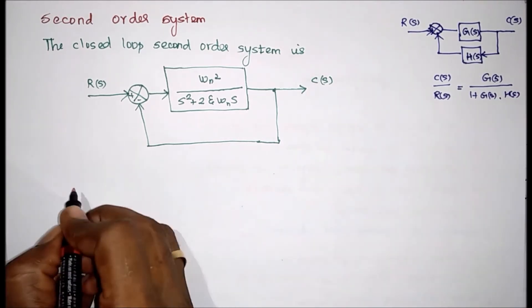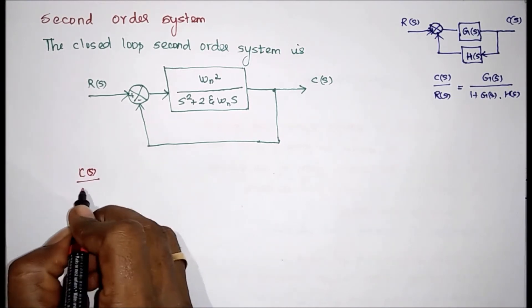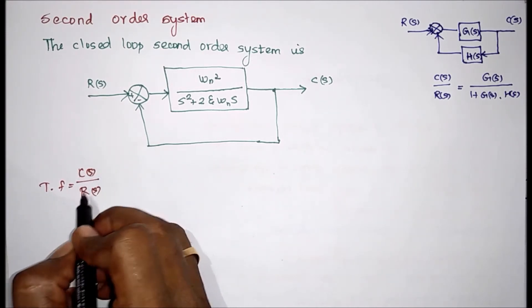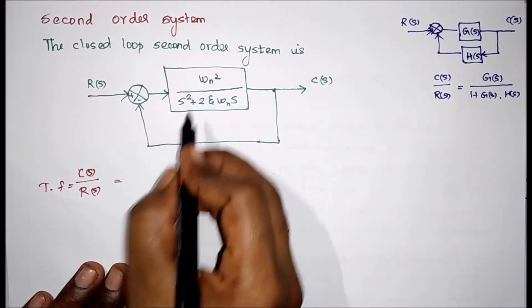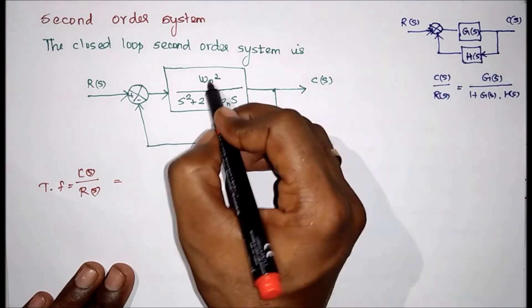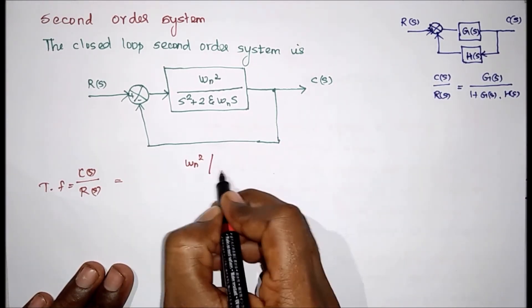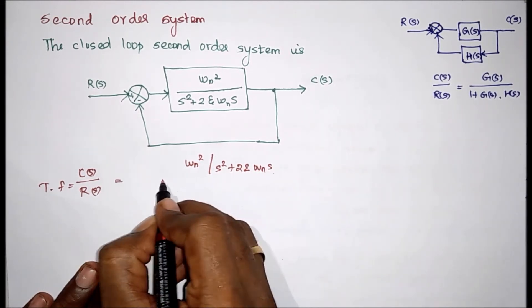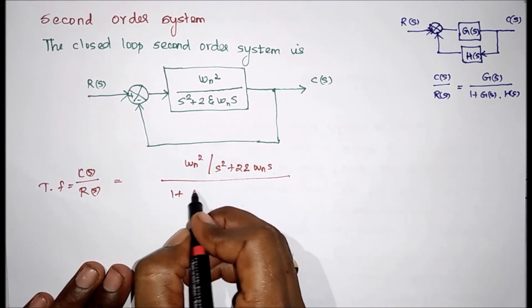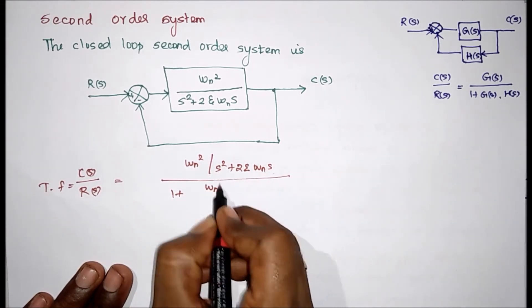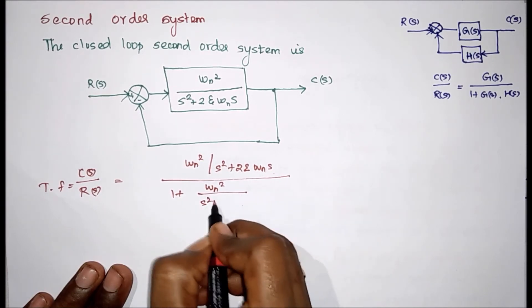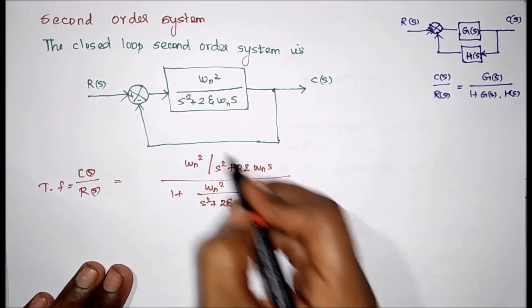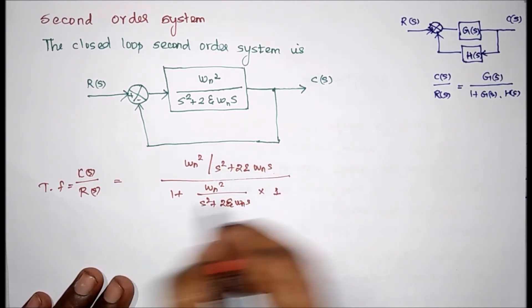Now we have to substitute. C(s) output divided by input — the transfer function equals the Laplace transform of output divided by the Laplace transform of input. G(s) value equals ωn² divided by s² plus 2ζωn·s, divided by 1 plus G(s), where G(s) equals ωn² divided by s² plus 2ζωn·s, and feedback gain H(s) equals 1.